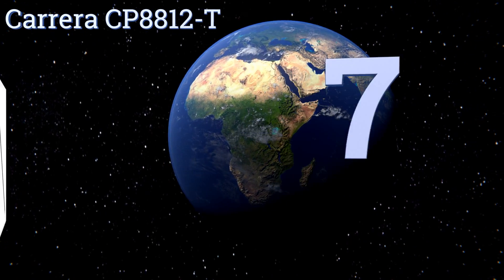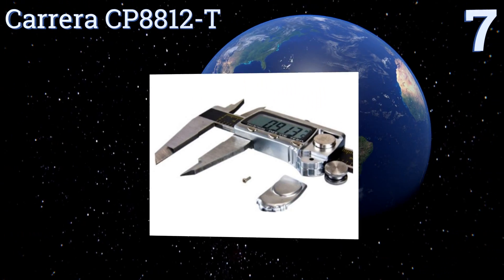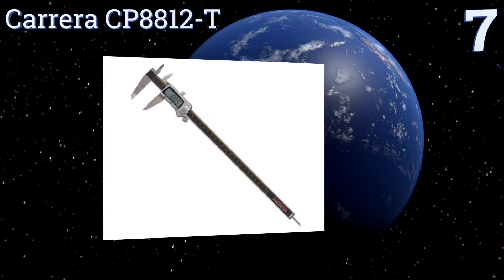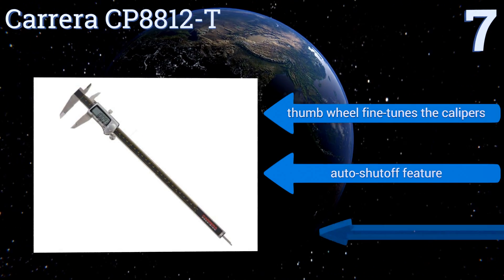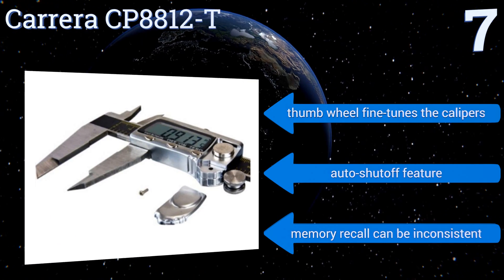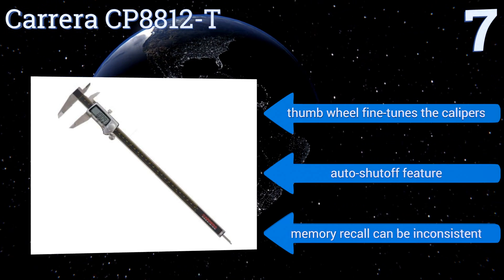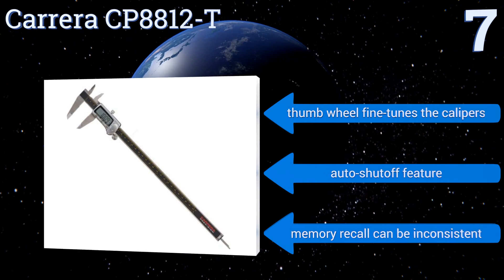At number seven, with a heavy-duty construction of stainless steel and a titanium alloy head, the Carrera CP 8812-T is an affordable machinist grade tool that provides superior durability and effectively gauges inside, outside, and depth clearances up to 12 inches. A thumb wheel fine tunes the calipers and it includes an auto shutoff feature, but its memory recall can be inconsistent.